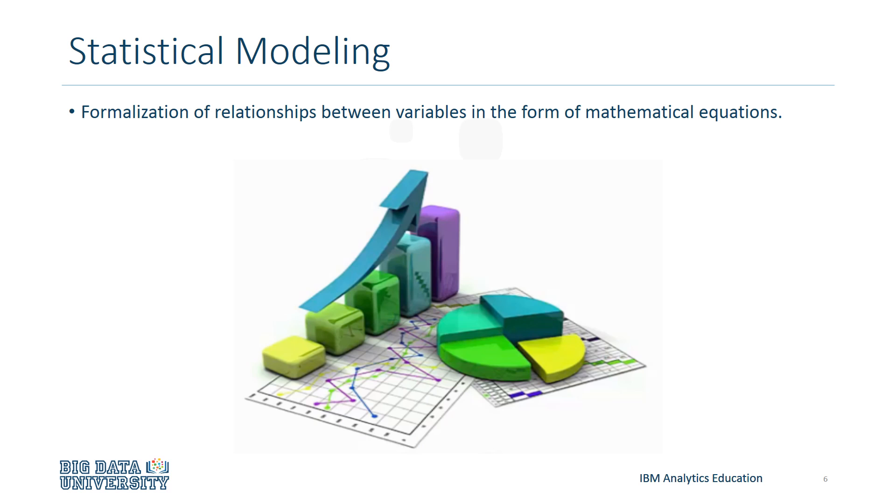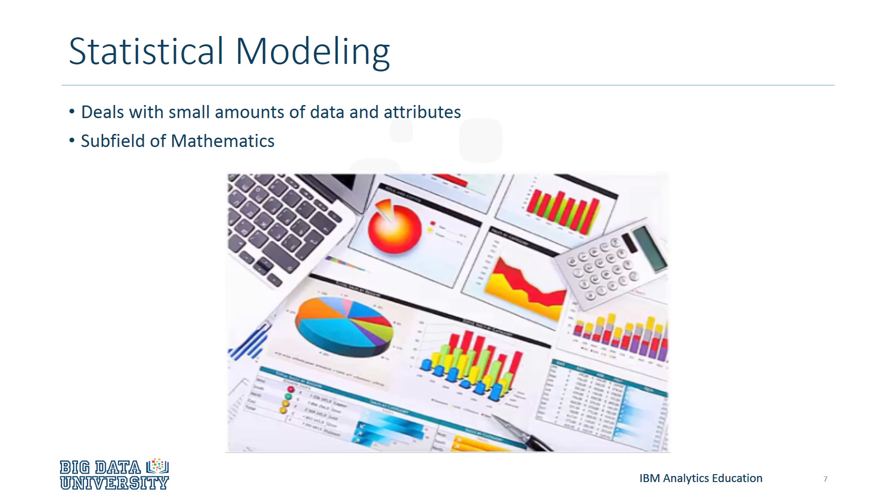Statistical modeling is the formalization of relationships between variables in the form of mathematical equations. Statistical modeling is a subfield of math that deals with finding relationships between variables to predict outcomes.